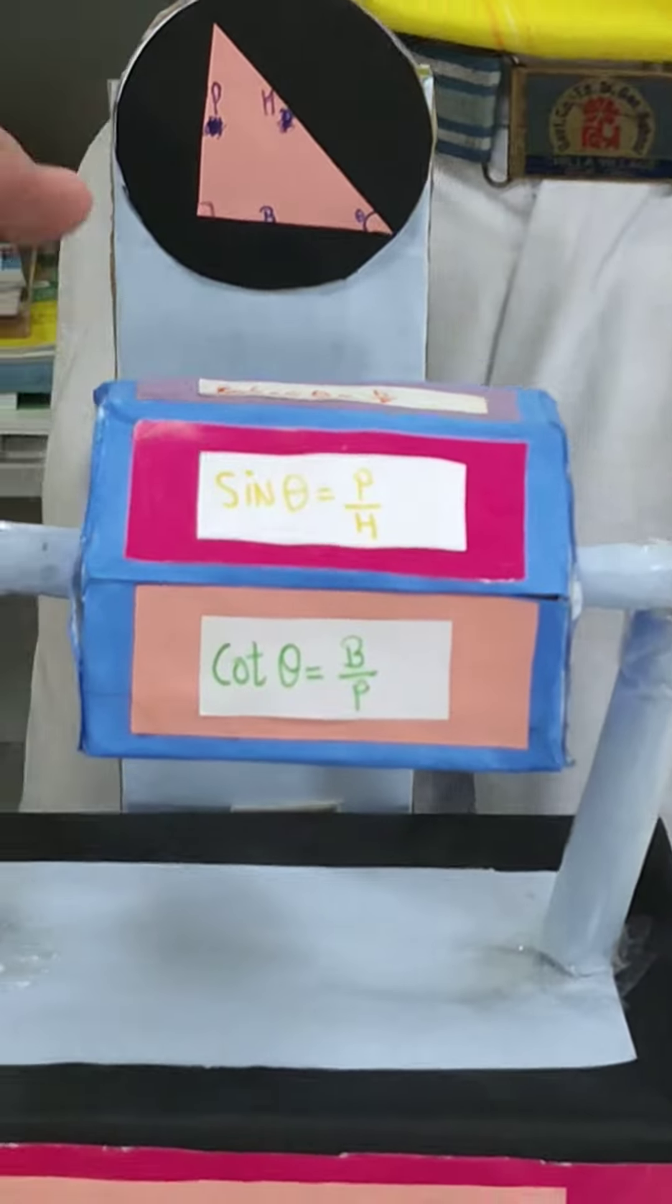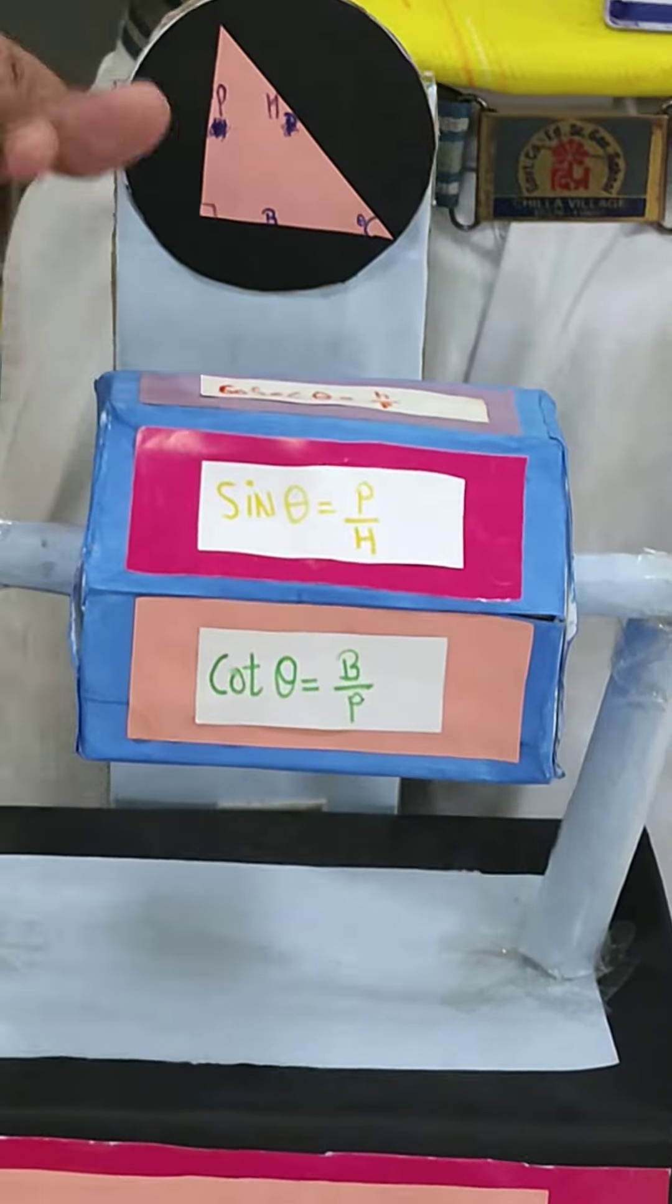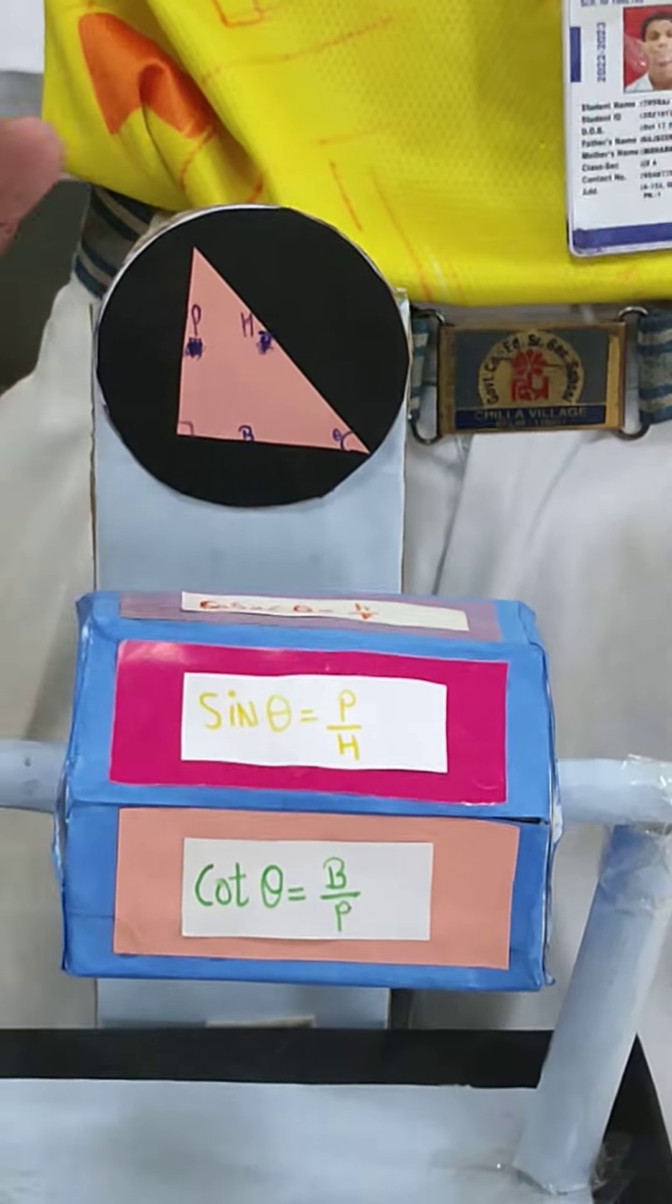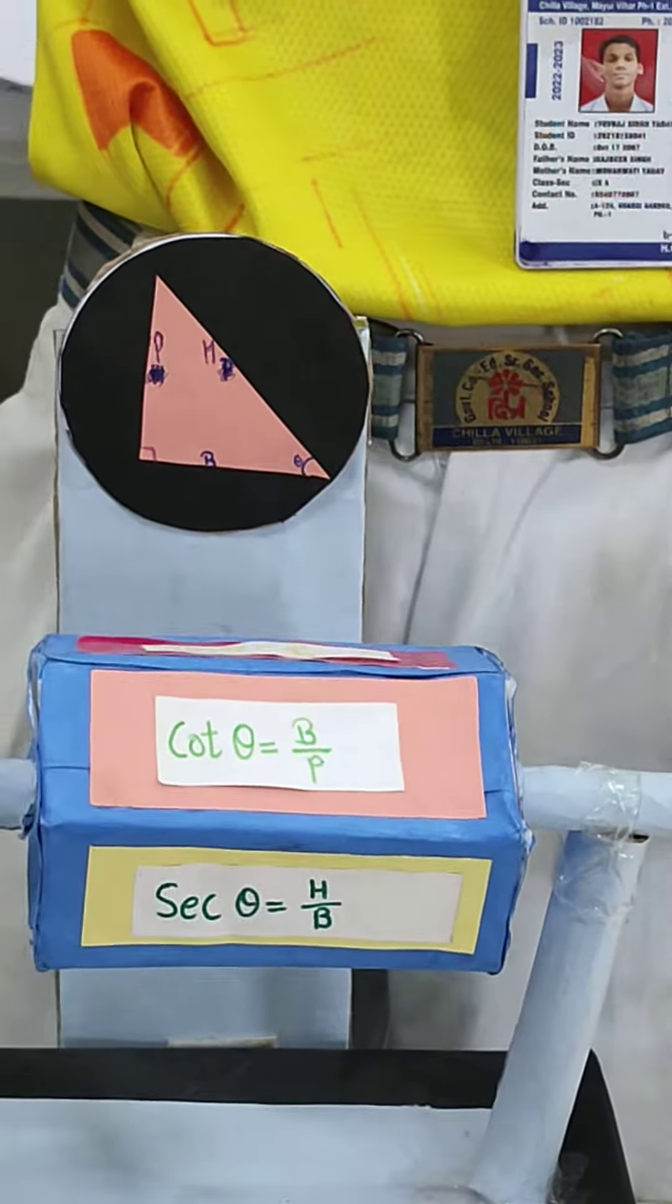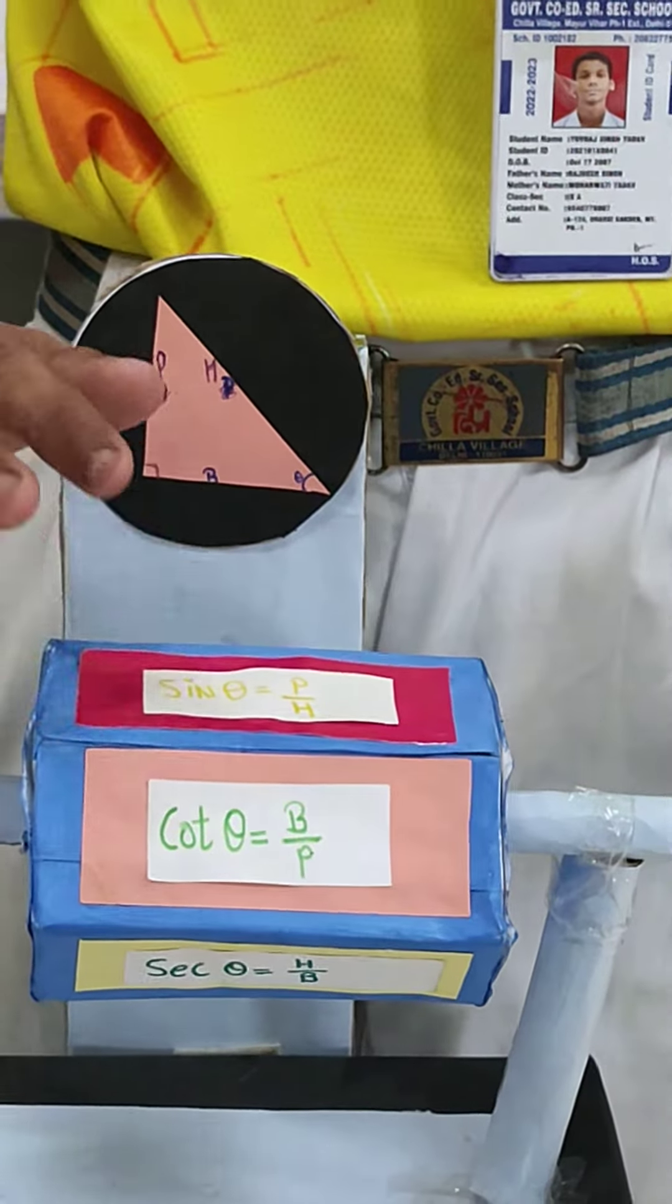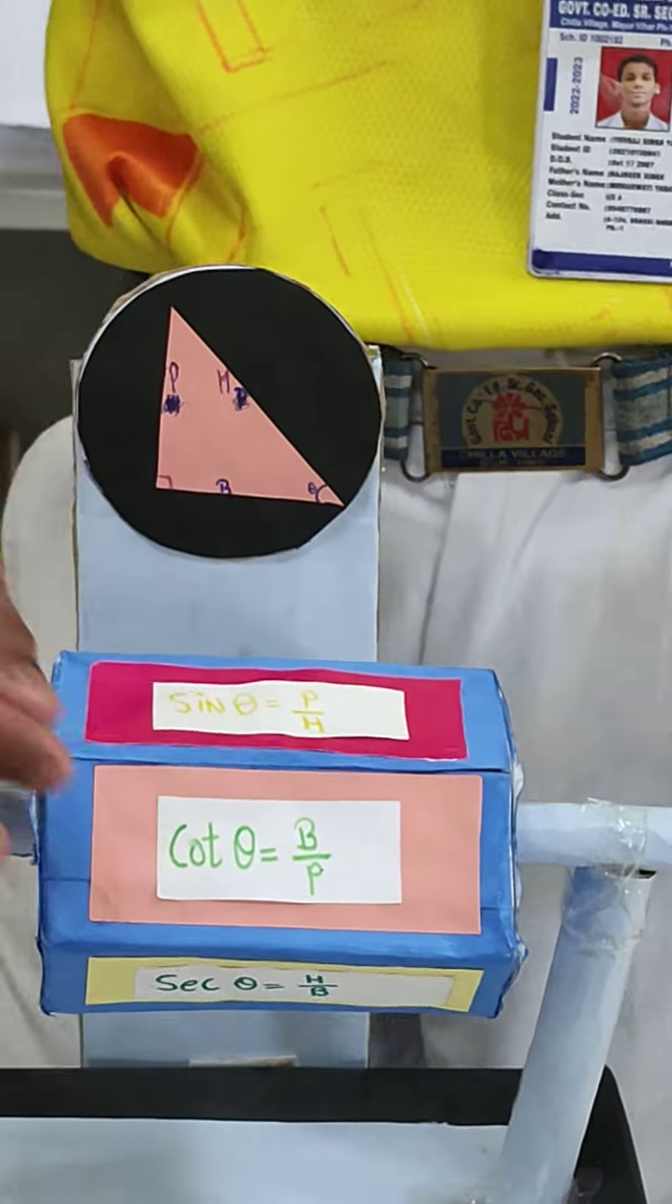I am going to explain the ratios. We have the perpendicular and the base. One way we can call tangent here, which is the sixth ratio.